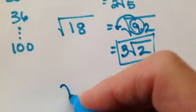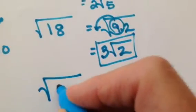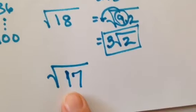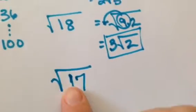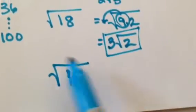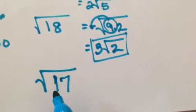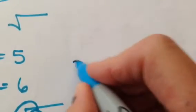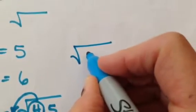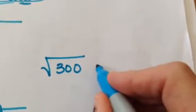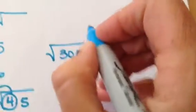Now, if you get something like the square root of 17, there is not a perfect square in 17 — you're just going to leave it like that. Or the square root of 3 — you're done, you can't simplify it any further. So you just have to think: is there a perfect square in there? Let's do one more. What if I did the square root of 300? Is there a perfect square in there? Some of you might be like, hey, 25 is in there.